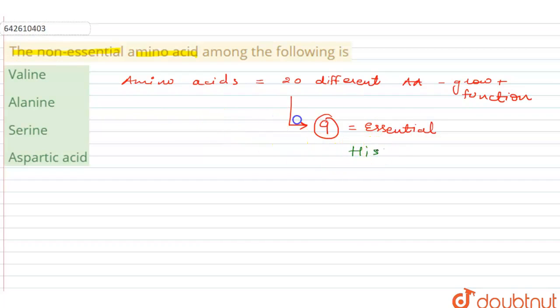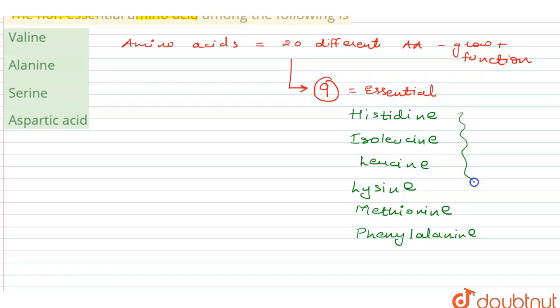Essential ones. Now under this essential we have a list of them for your reference if you need it for any other question. It's going to be histidine, then we have isoleucine, leucine, lysine, after that we are having methionine, phenylalanine, then we have tryptophan and the last one is valine. These are the essential ones.